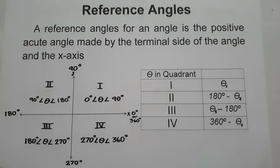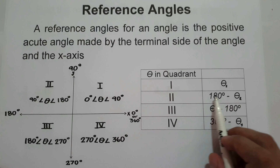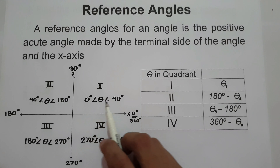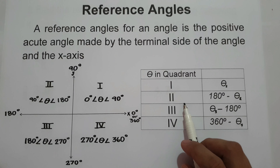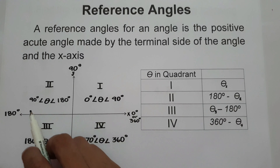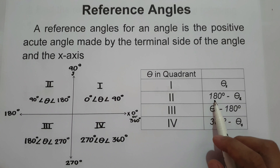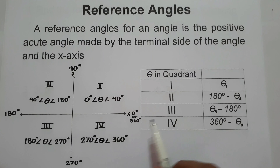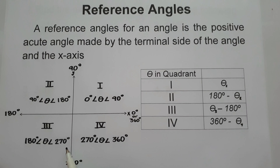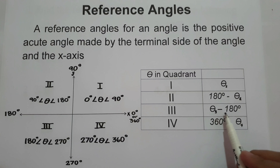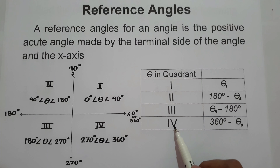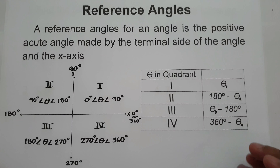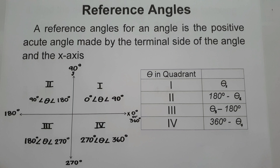How do we find the reference angle in the given quadrant? In quadrant 1, the reference angle is equal to the angle itself. If the angle is in quadrant 2, the reference angle is equal to 180° minus the angle. If the angle is in quadrant 3, the reference angle is equal to the angle minus 180°. And if the angle is in quadrant 4, the reference angle is 360° minus the angle.